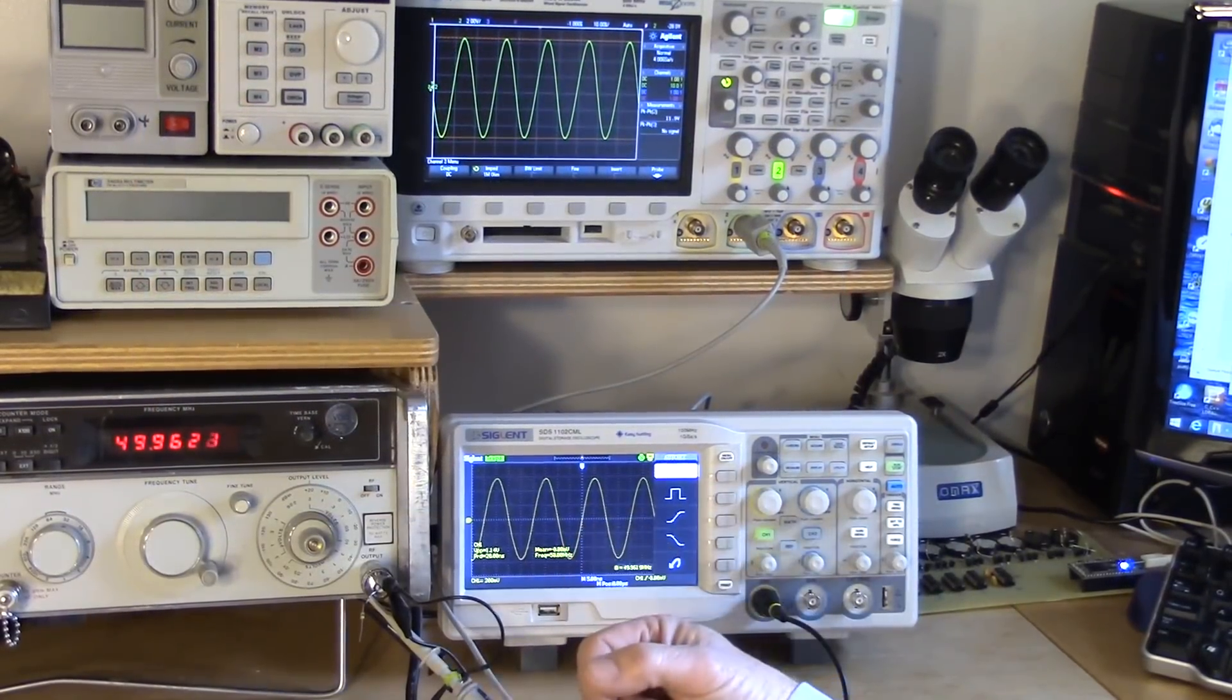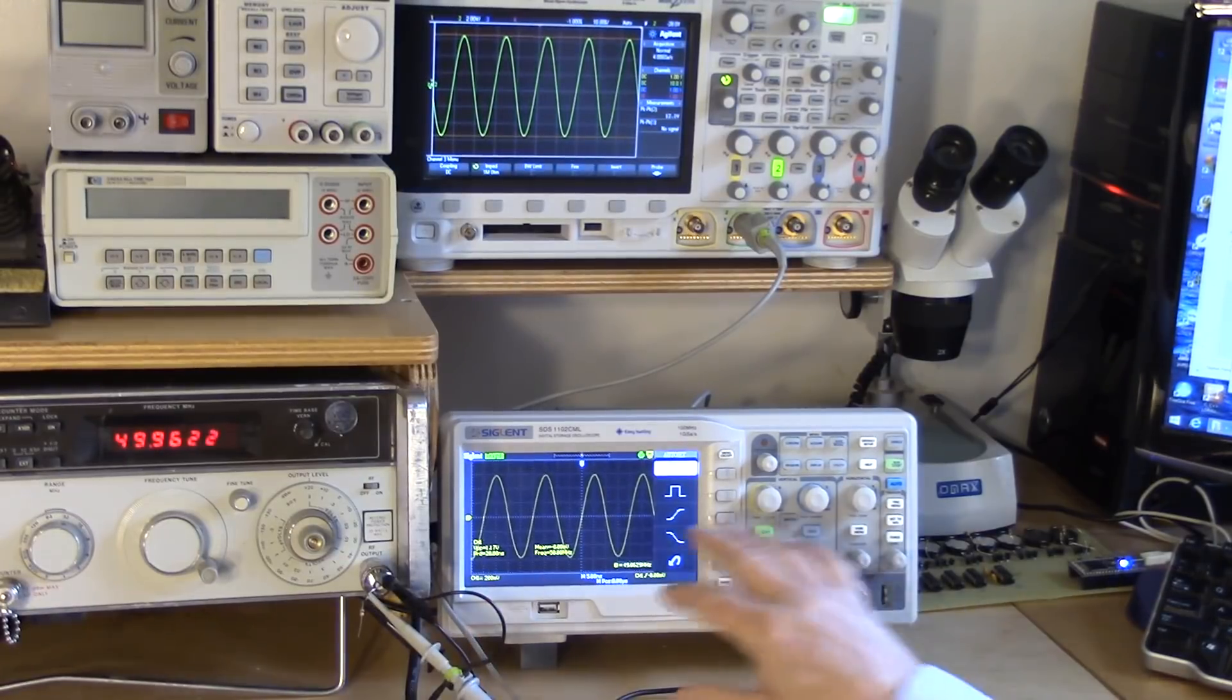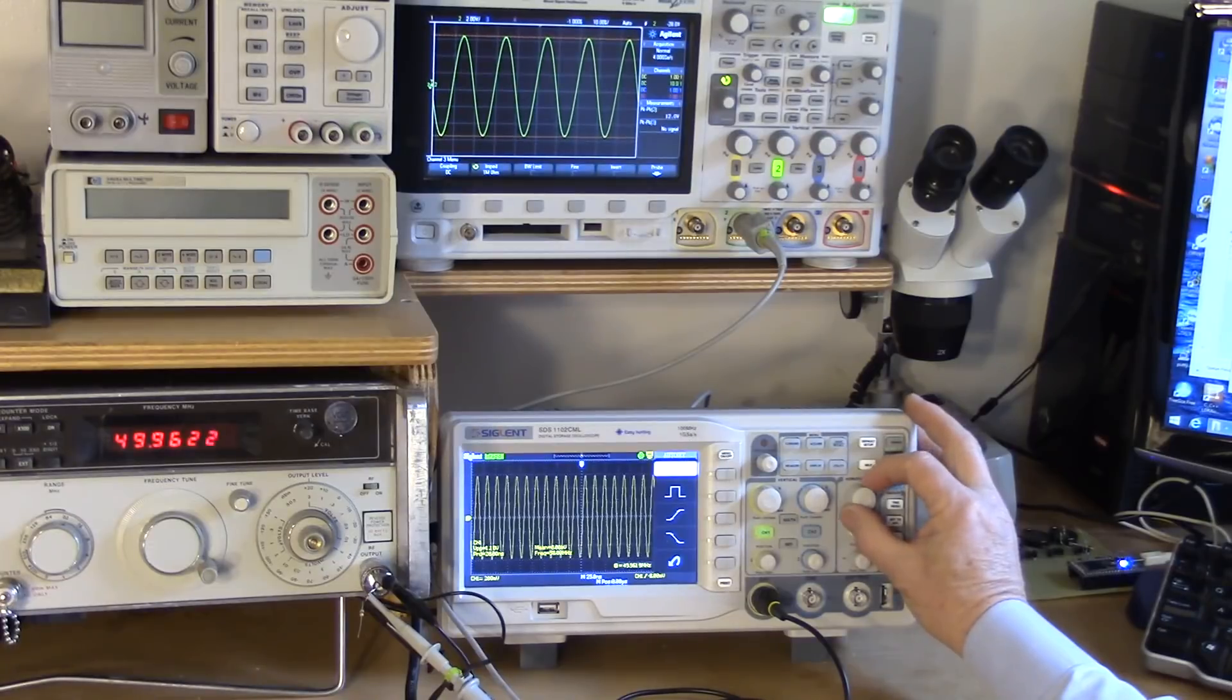Here, the signal is displaying a sine wave from a very spectrally pure signal generator, 50 megahertz. And it's pretty much what you would expect. As I turn the sweep rate down, slower and slower,